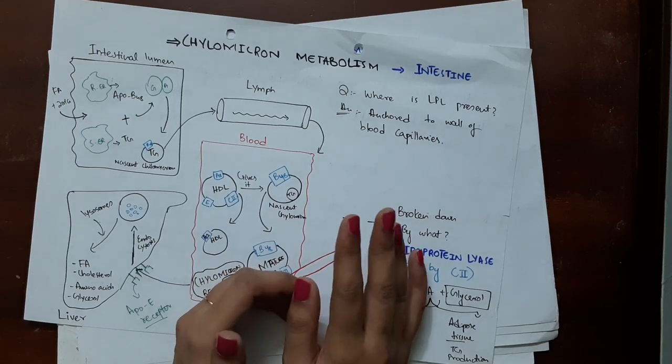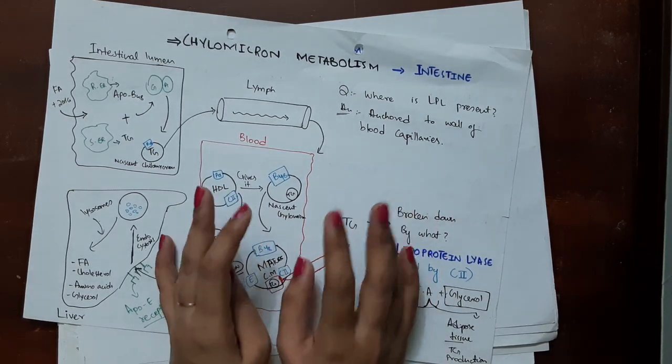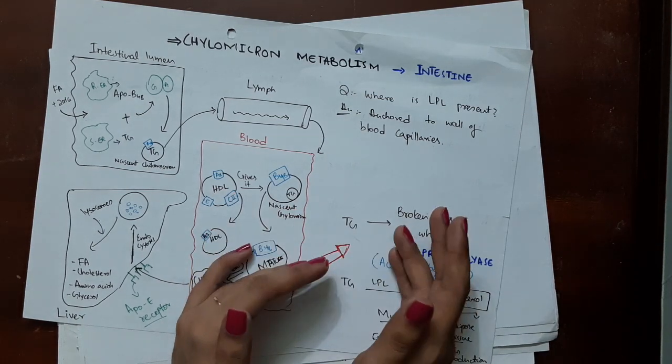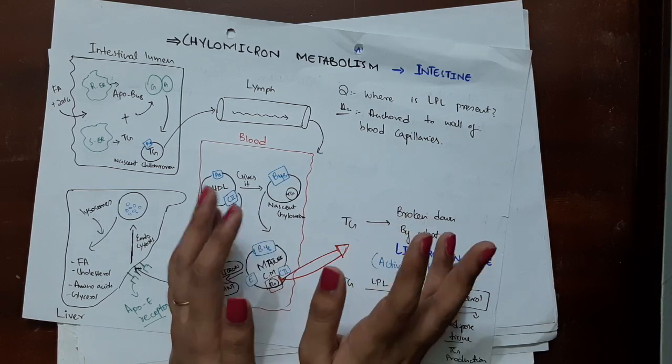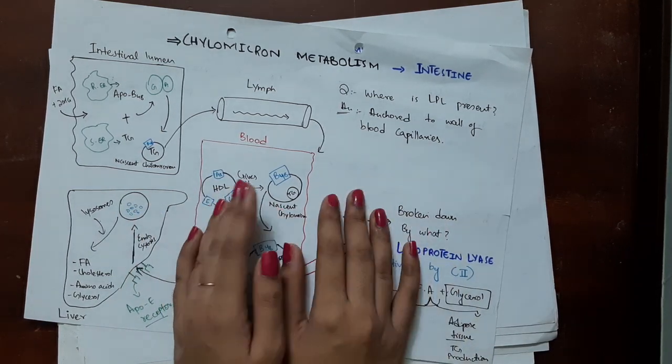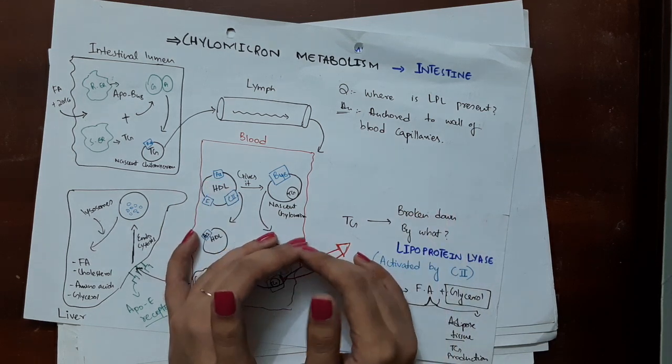Tip number four is use colors. Don't make your notes in black and white. You might say that you just think it's more productive to just use two colors and not waste time. You don't have to make a rainbow out of your notes, nobody's saying that.